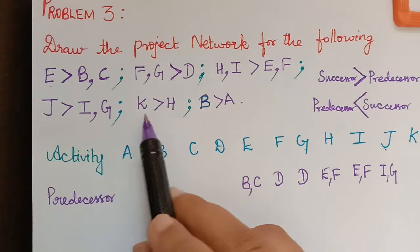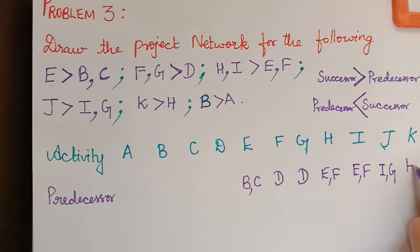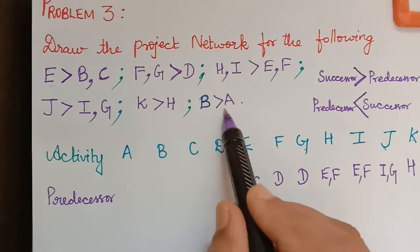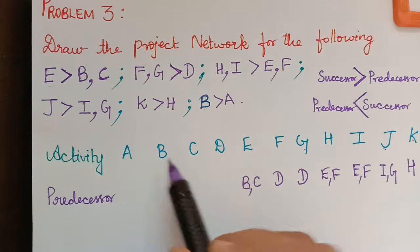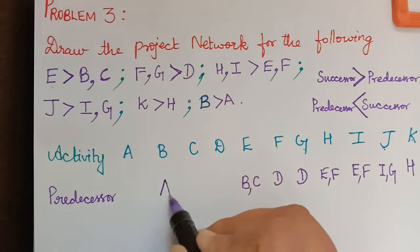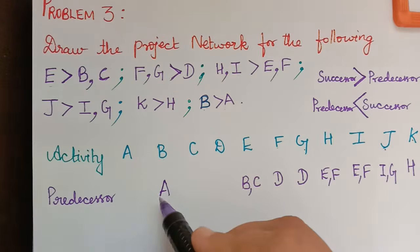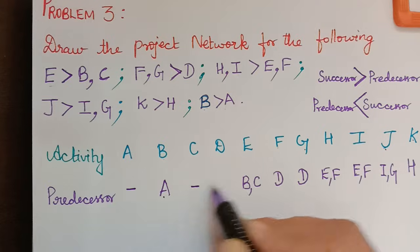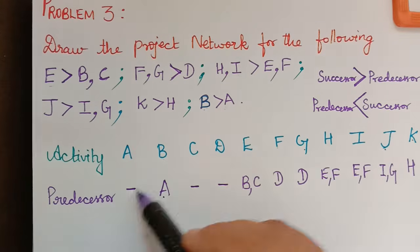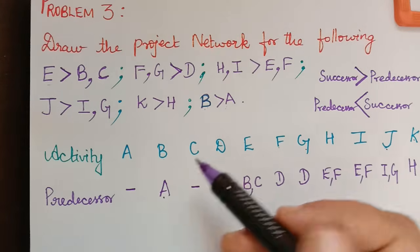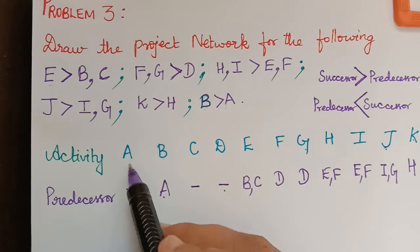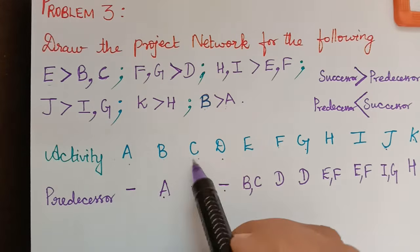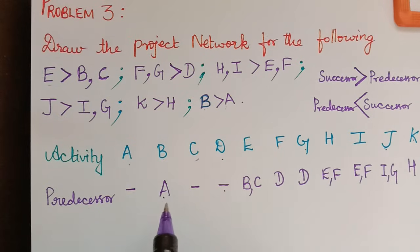H is the predecessor of K, and A is the predecessor for activity B. The remaining activities — A, C, and D — are hyphenated, meaning they do not have a predecessor. These three will be the starting activities and will start simultaneously.